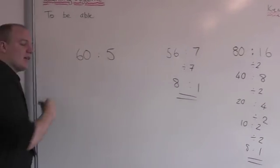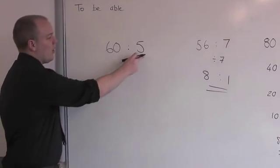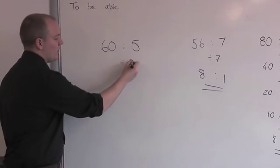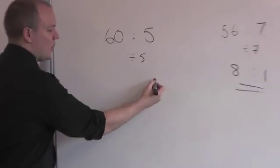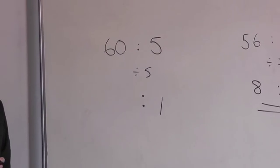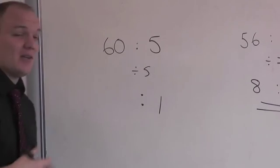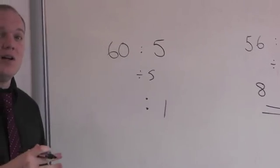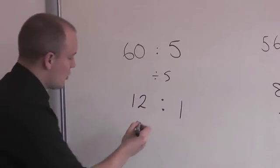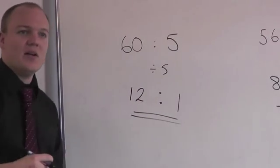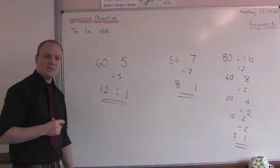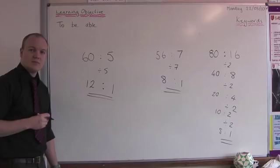Last one — a little bit harder because it's outside your 10 times table. But if that ends in a 0, we can divide it by 5. How many 5s go into 5? That is 1. 60 divided by 5: I know 50 divided by 5 is 10, and there's 10 left over, and 10 divided by 5 is 2, so that gives me 12. So 60 to 5 simplifies down to 12 to 1. 56 to 7 divides down to 8 to 1.